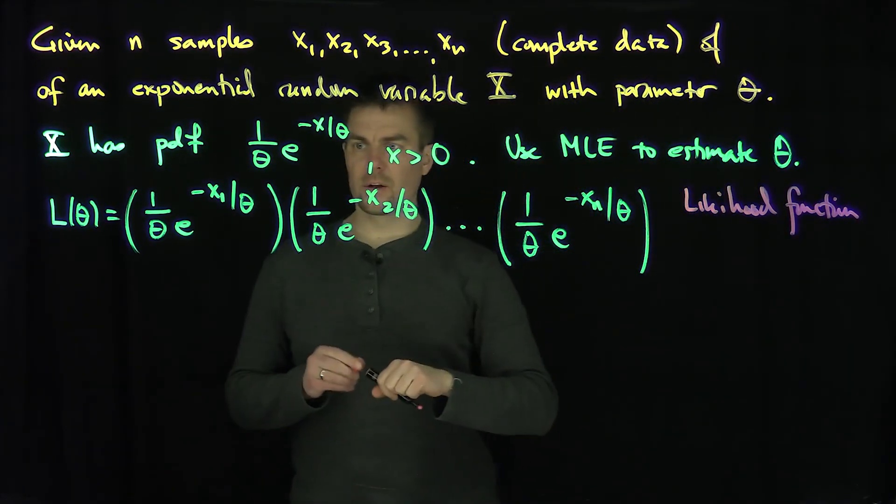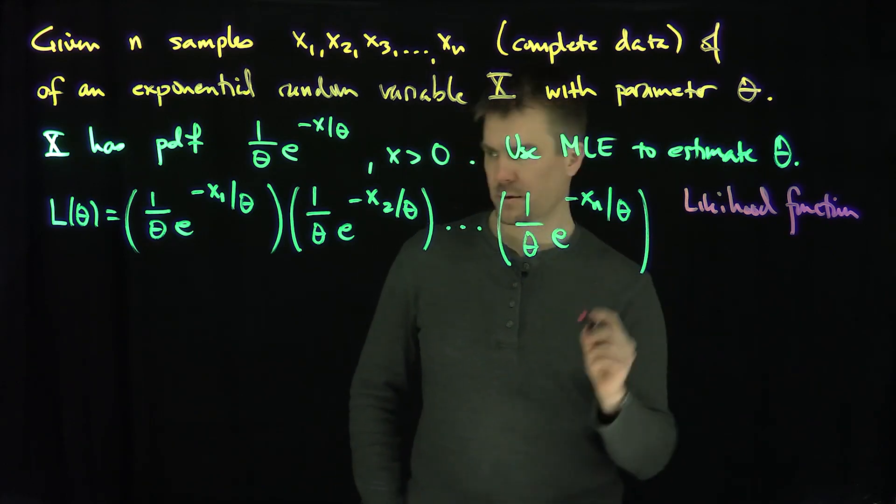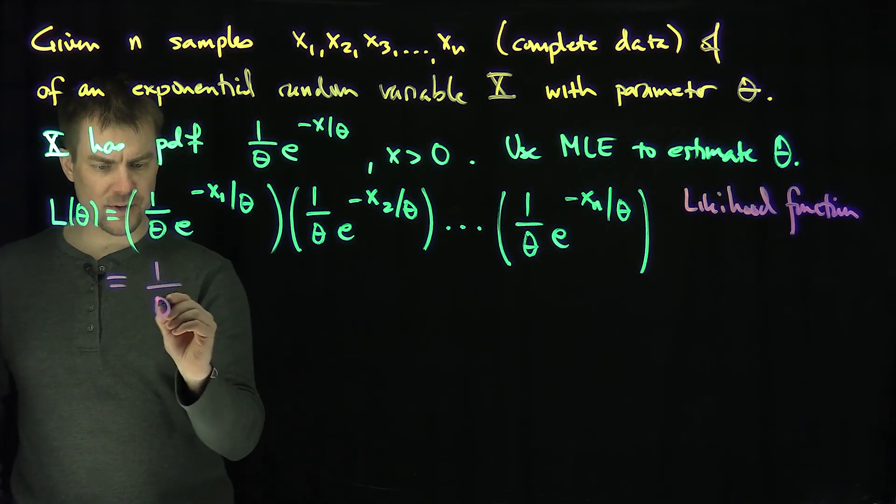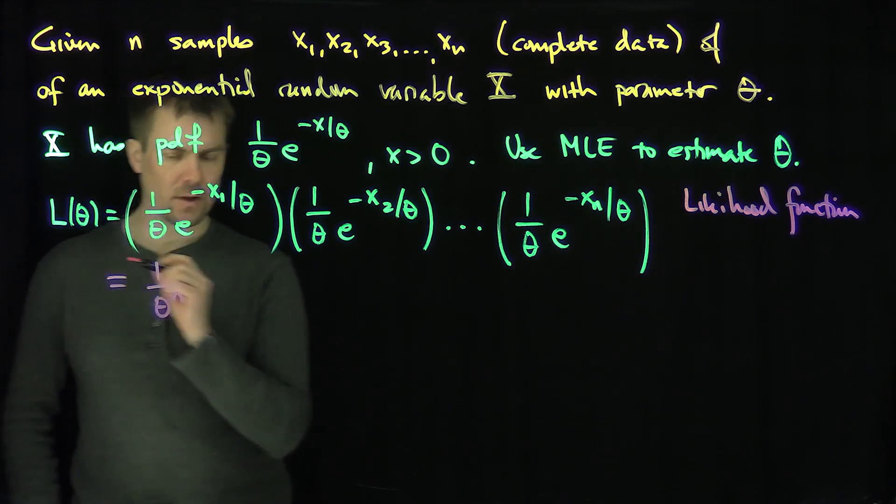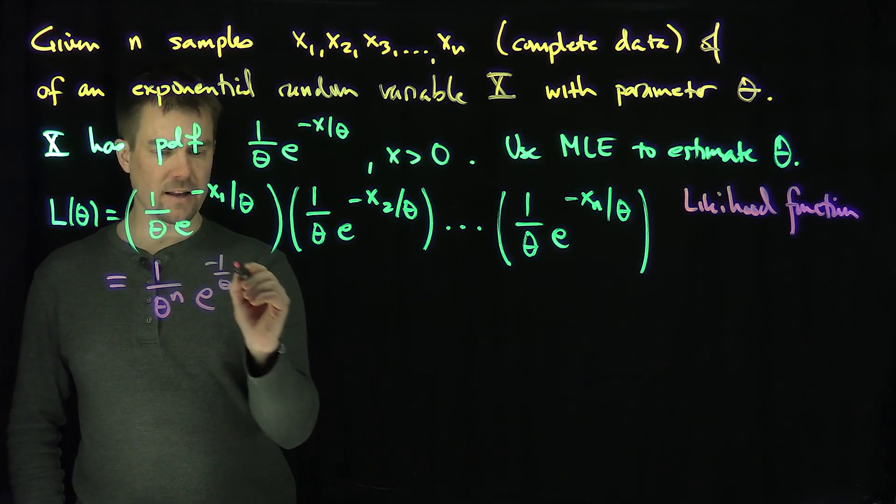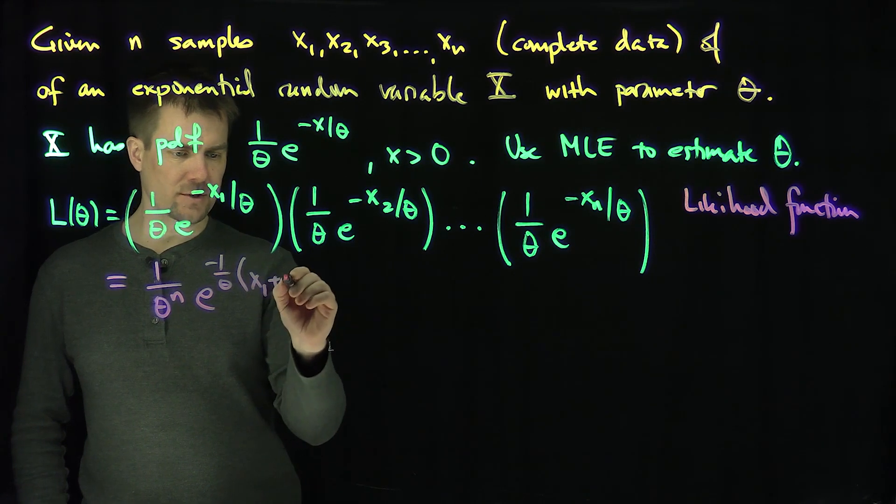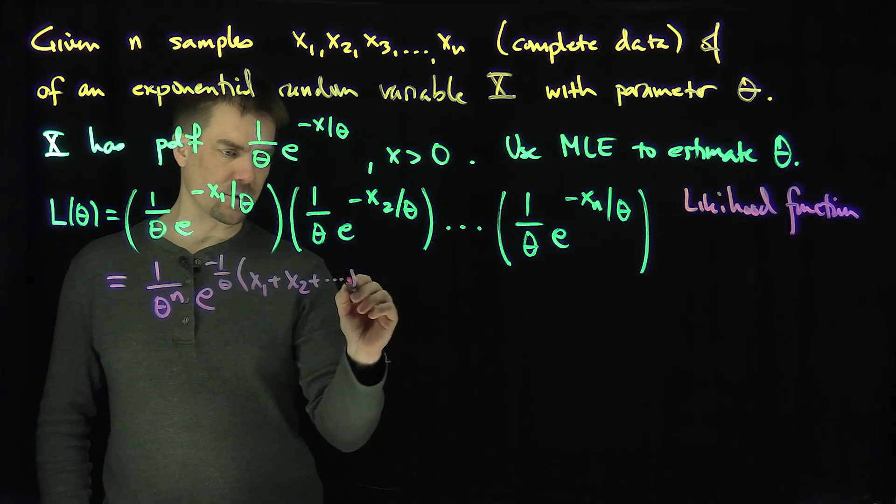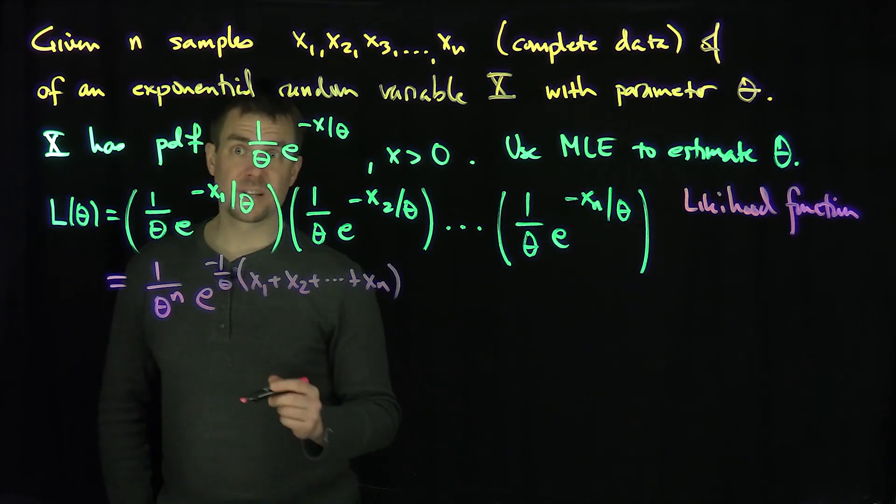Of course, we can simplify the likelihood function. This will be equal to 1 over theta. There's n copies of this to the power n. And then, all these exponentials will just be added up. So I have 1 over theta with a negative sign, and then x1 plus x2 plus all the way down to xn. Now, we can simplify that.